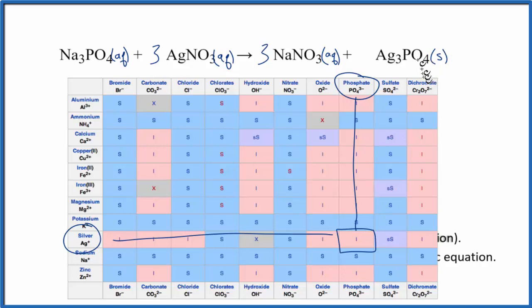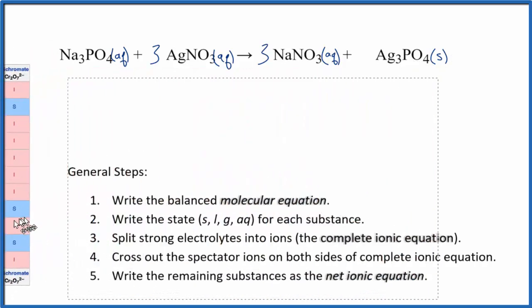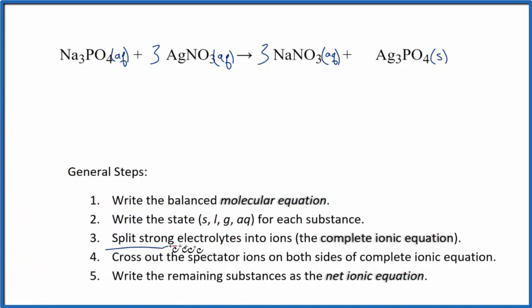Okay, so we have our states. Now we can split the strong electrolytes part into their ions. And this is going to be the complete ionic equation. Sometimes it's called the total ionic equation.